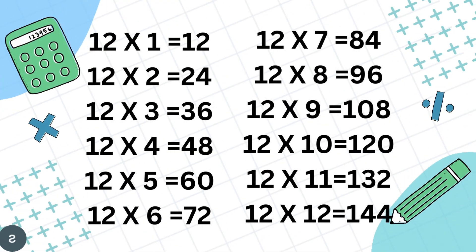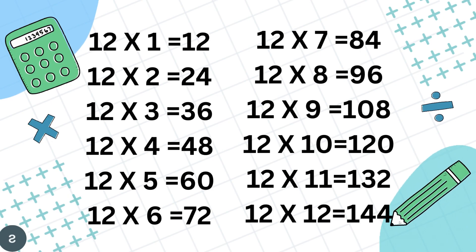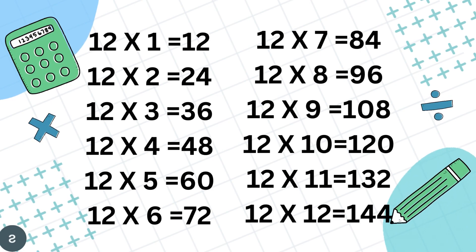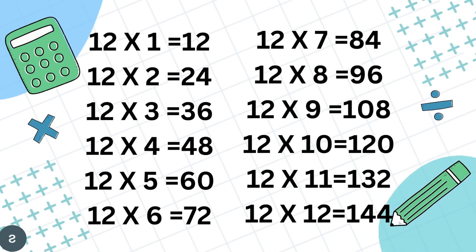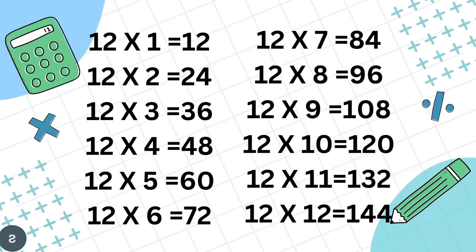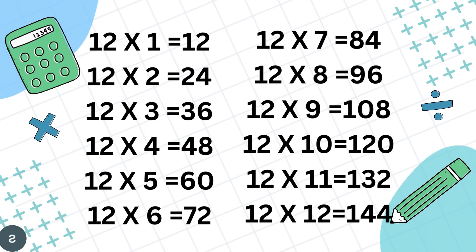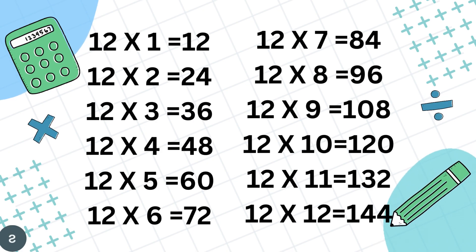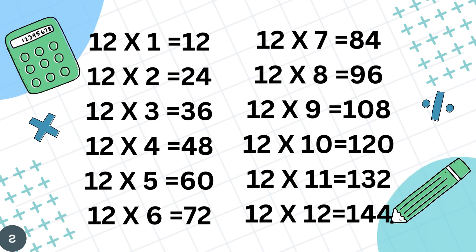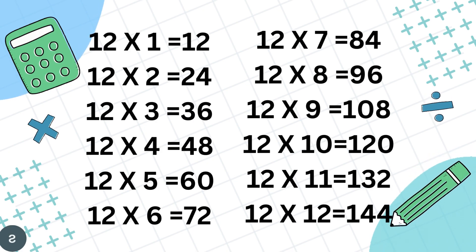Table of 12. 12 1's are 12, 12 2's are 24, 12 3's are 36, 12 4's are 48, 12 5's are 60, 12 6's are 72.